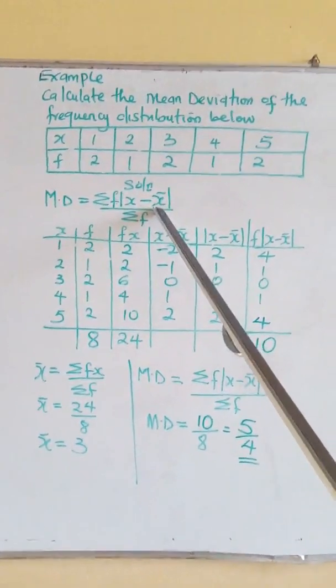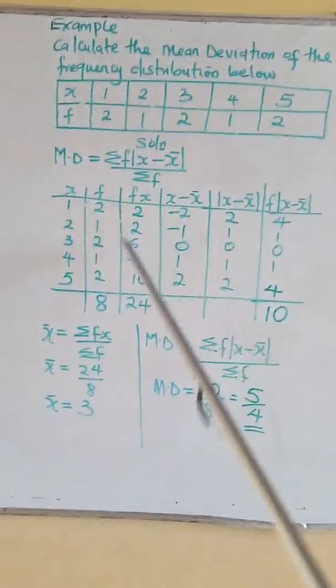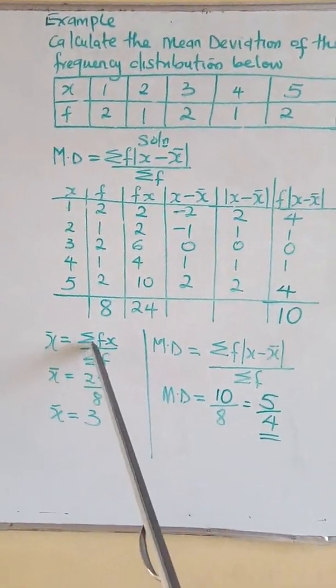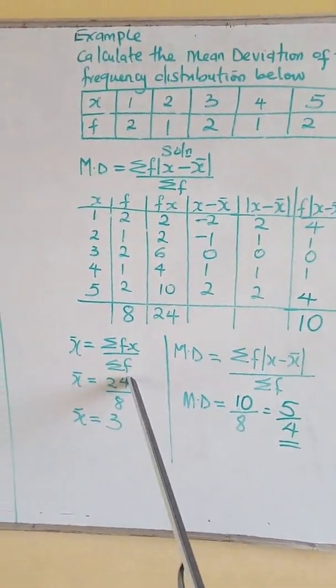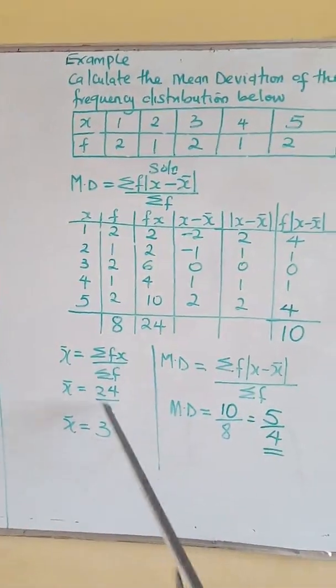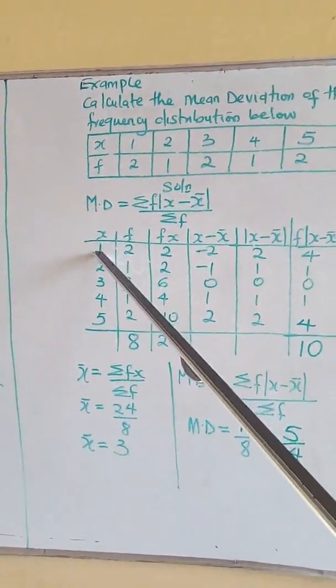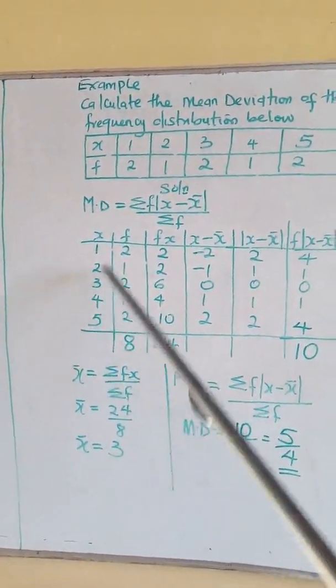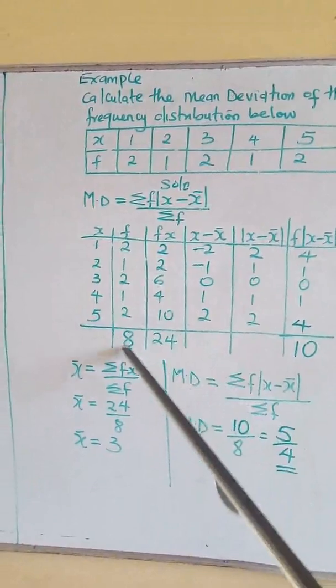To do that, this is the formula for it: summation fx over summation f. So prepare a table for it. You line up your x on this column, you line up your f on this column from the table.